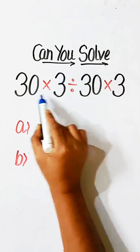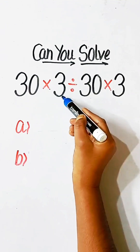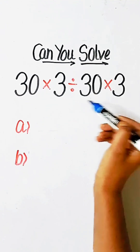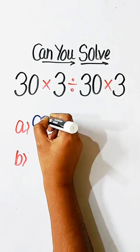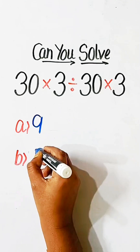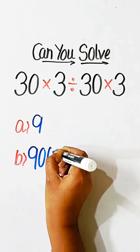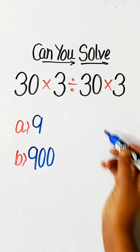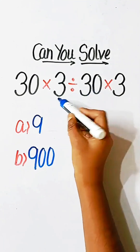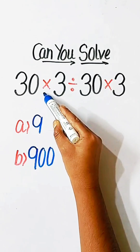Can you solve this easy math expression: 30 × 3 ÷ 30 × 3 equals what? Option A: 9, or Option B: 900. Let us solve this math problem. In this expression, we have both multiplication and division, so we will start from left to right.